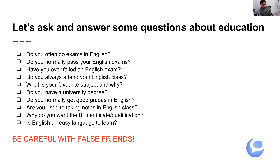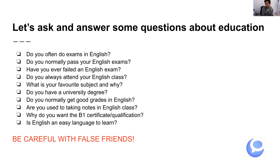For example, number one: Do you often do exams in English? You might answer: Yes, I do. I often do exams in English because I am learning English at the moment. That would be a B1-level answer. You can also say what you like, what you don't like. So I'll ask the question, you pause and answer.